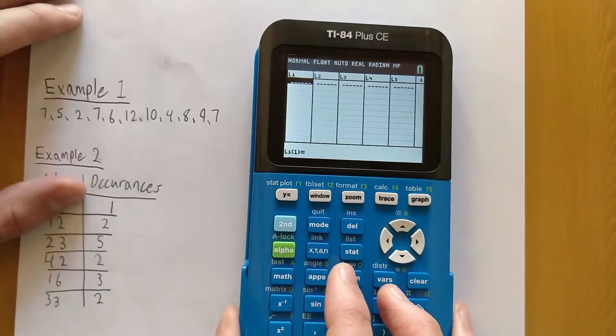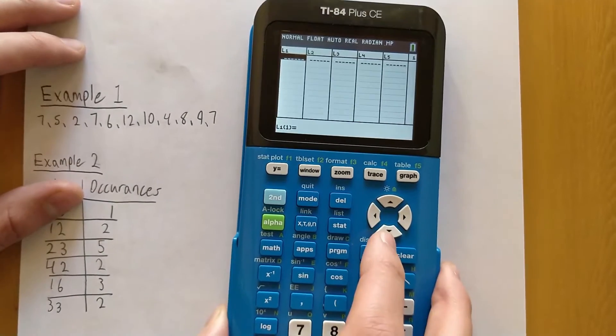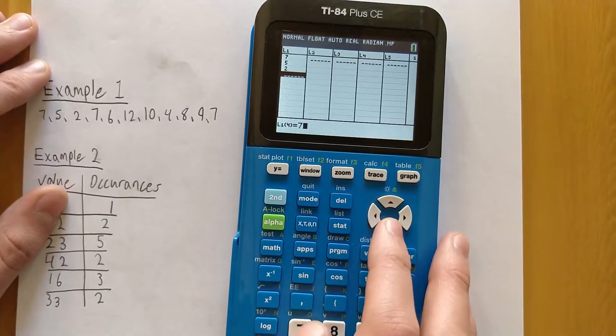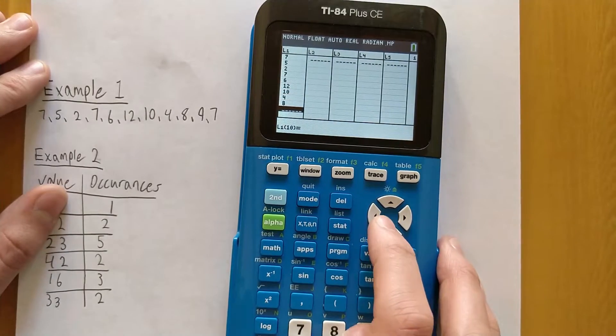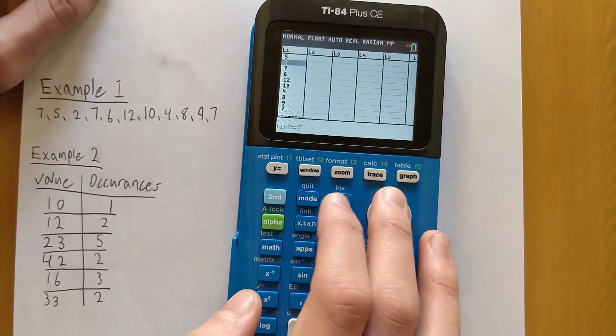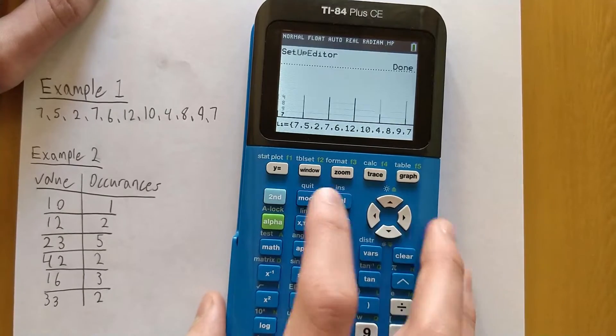Okay, now that that's all sorted out, let's actually type in our values into the L1 list here. So we have 7, 5, 2, 7, 6, 12, 10, 4, 8, 9, and 7. And then once you've typed in all of your values, you can press Second and then Mode, which is Quit, to get out of this.